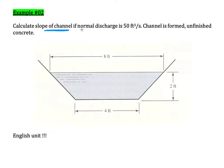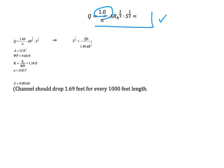The normal discharge is 50 cubic feet per second. The channel is formed from unfinished concrete, so check the table for the value of n — here n equals 0.01. The cross-sectional area A is 12 square feet, the wetted perimeter is 9.66 feet, and the hydraulic radius is 1.24 feet.